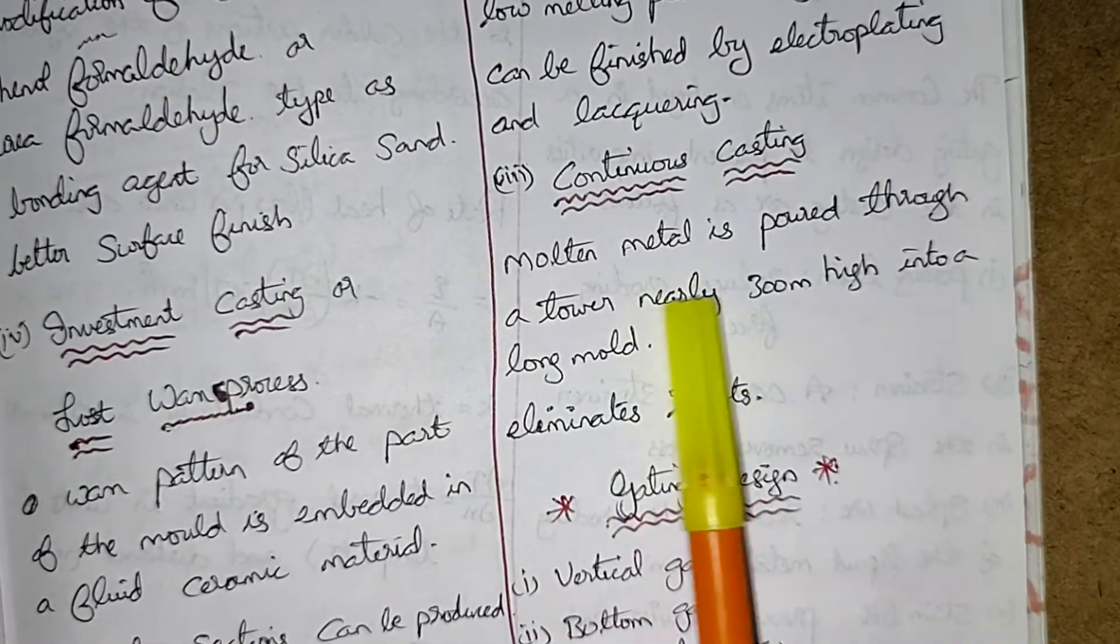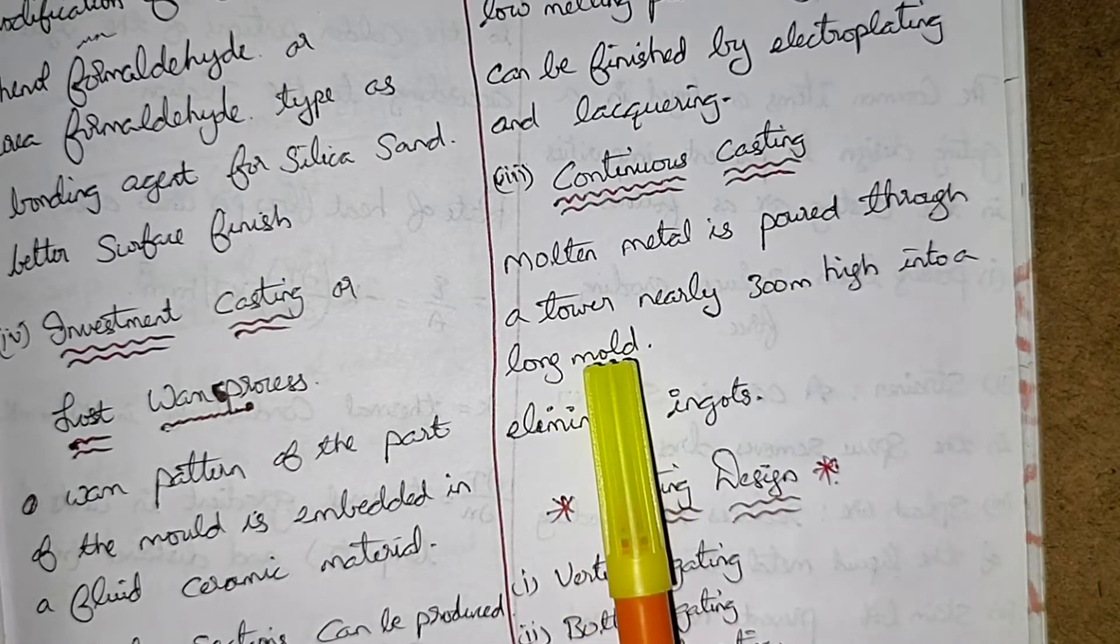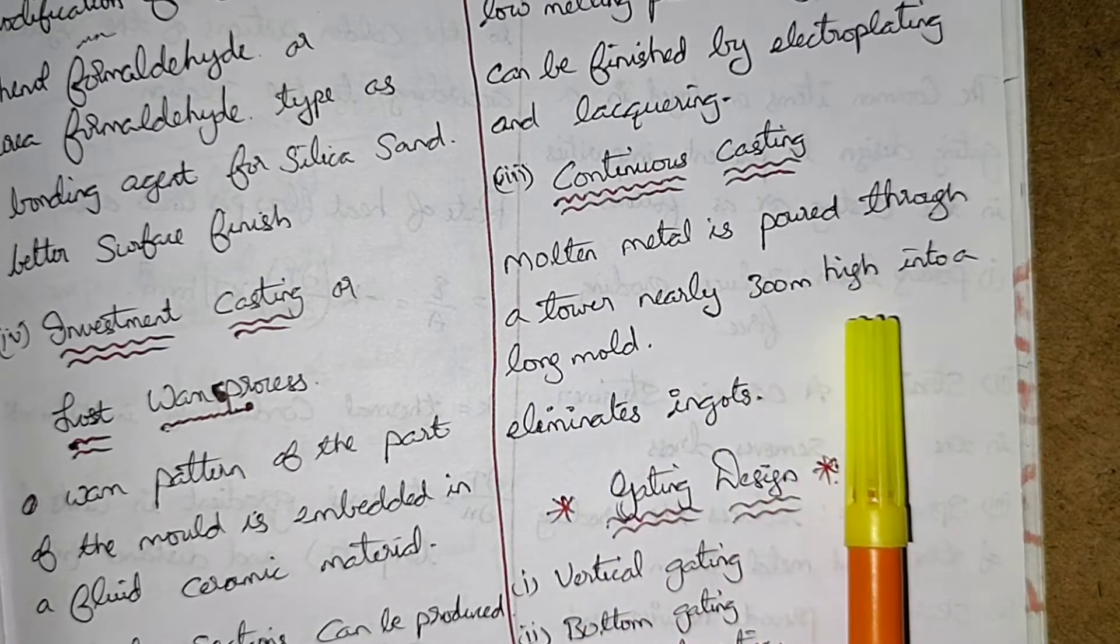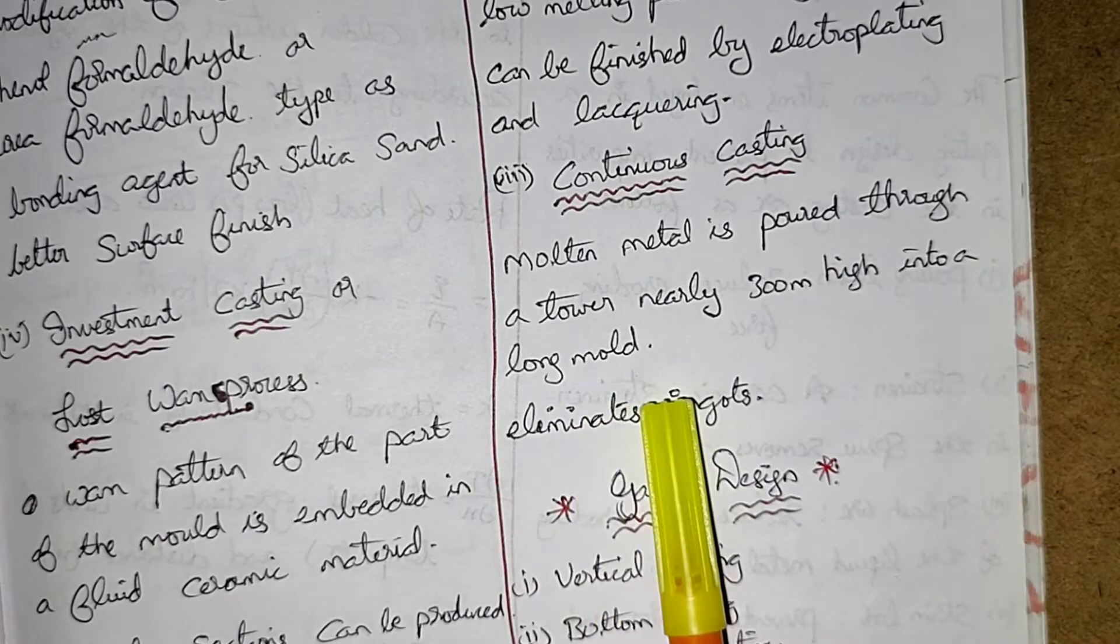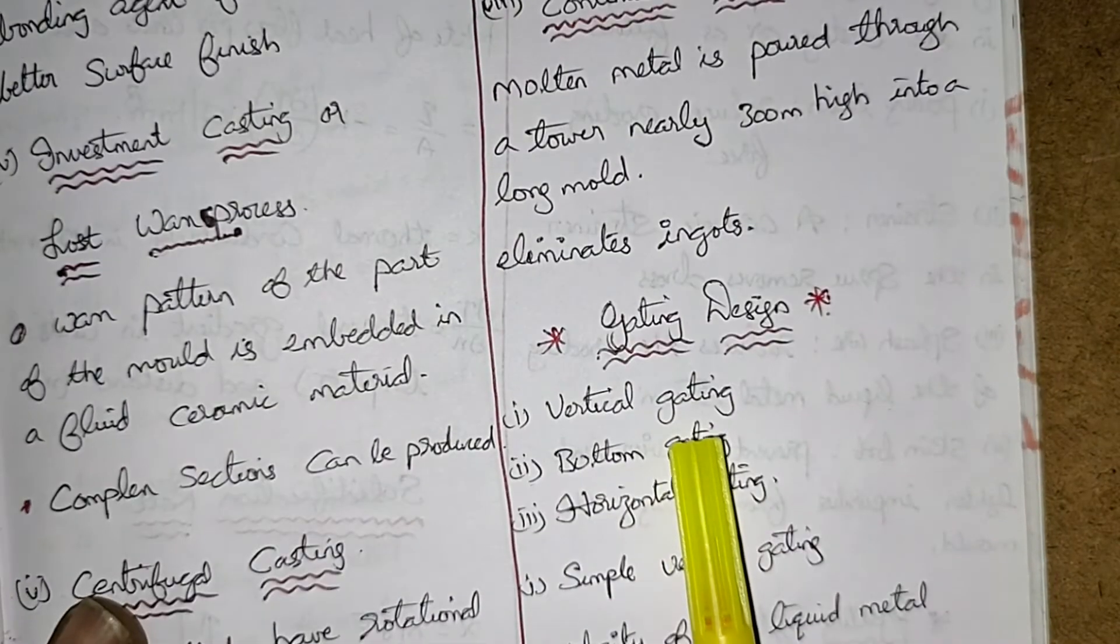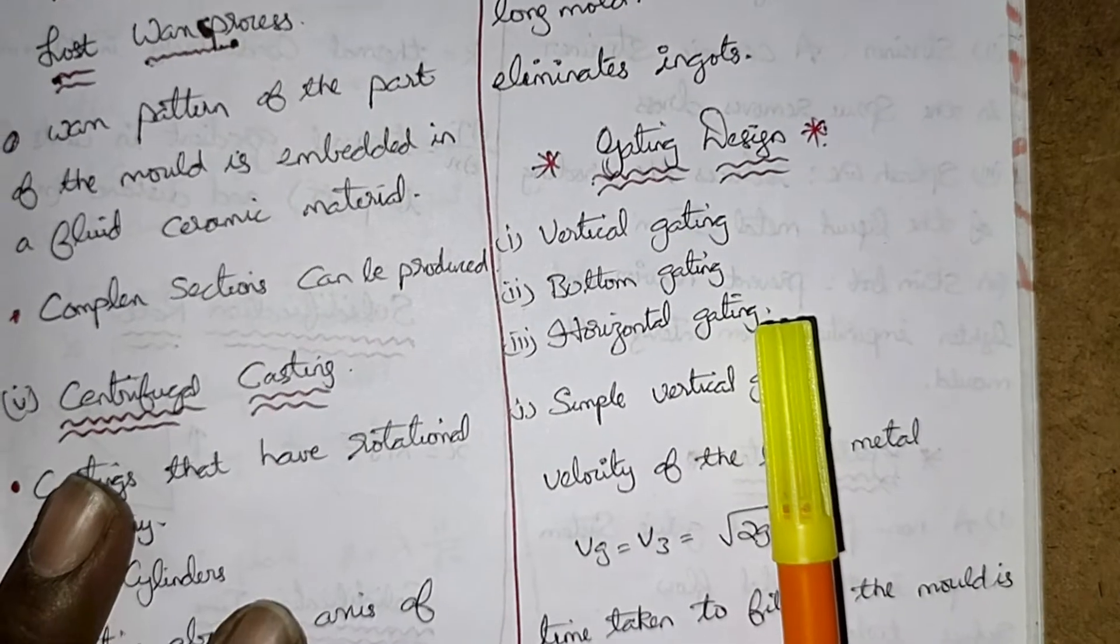Continuous casting - molten metal is poured through a tower nearly 300 meter high into a long mold. Eliminates ingots.